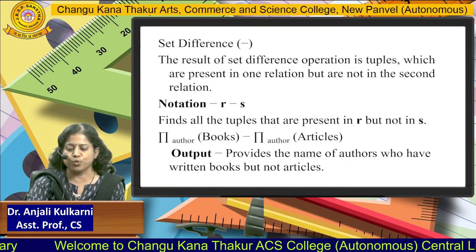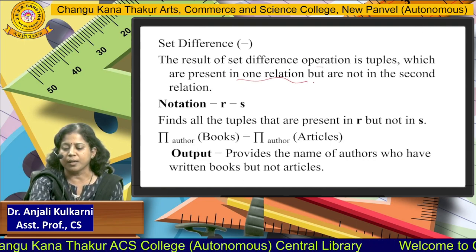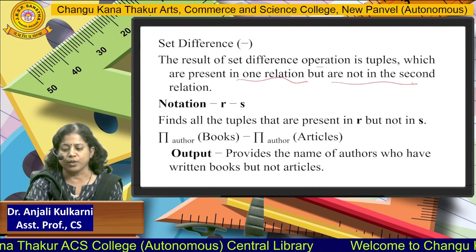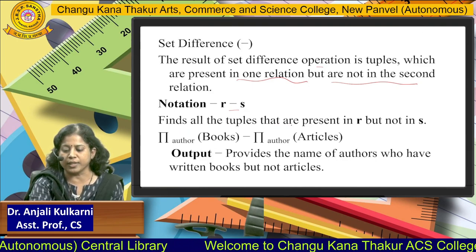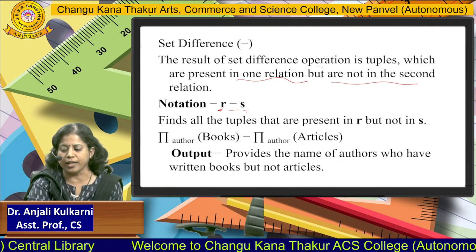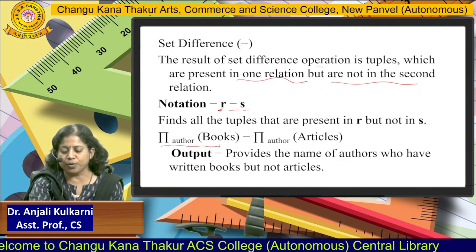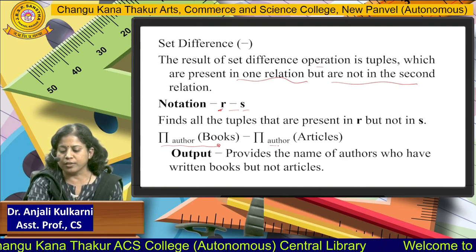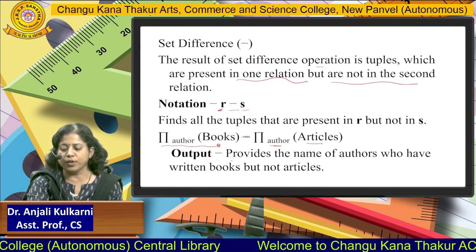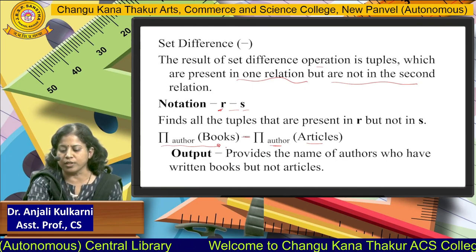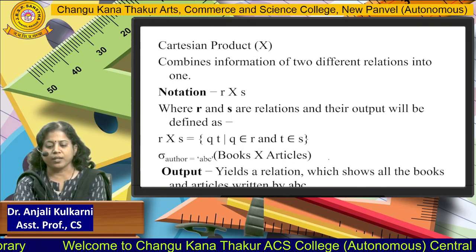Now, set difference. The set difference operation returns tuples which are present in one relation but not in the second. For example, R minus S finds all tuples present in R but not in S. Taking author from Books minus author from Articles gives the names of authors who have written books but not articles.